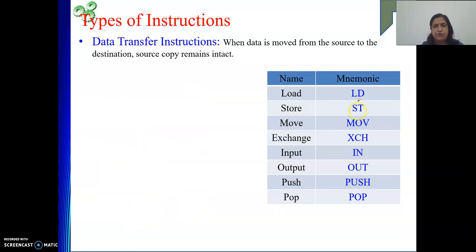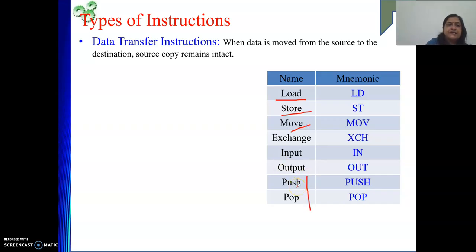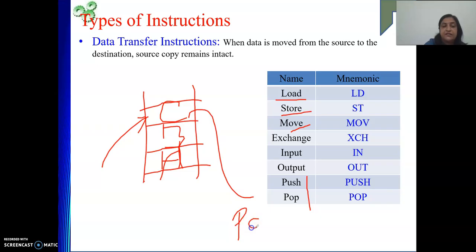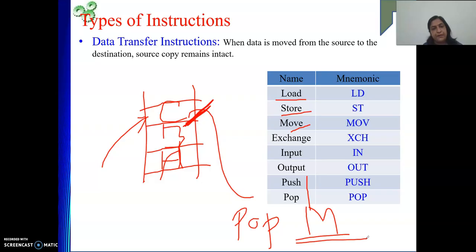Load instruction is for loading a value from memory; store means storing into memory; move we know. Push operation is used for sending some value from a memory location to the top of the stack. Suppose the stack already has values 10, 20, and memory location A and B's values. To push C, I write push C. Pop operation is for getting the top element into some memory location — for example, pop M stores the top stack value into memory location M. Next, three new instructions: exchange, input, output.